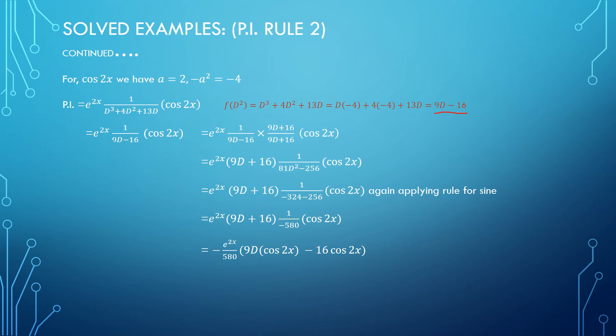We will operate this 9d plus 16, which is the operator we have kept outside till we apply Rule 2, and that is how you can get your particular integral. Then we can write the general solution y equals CF plus PI.